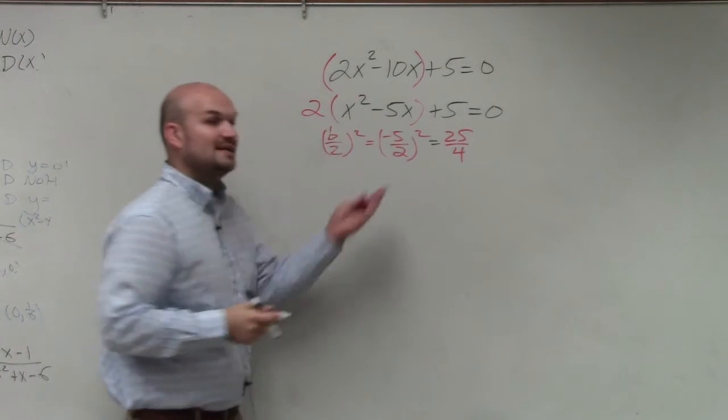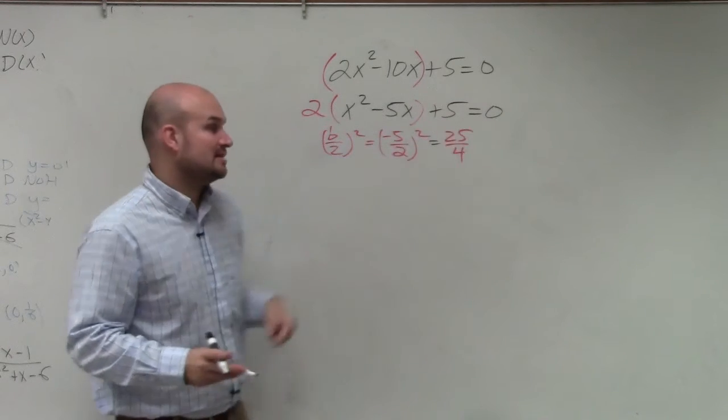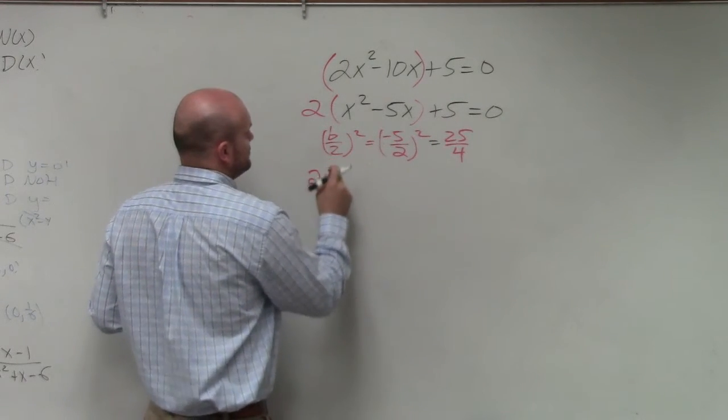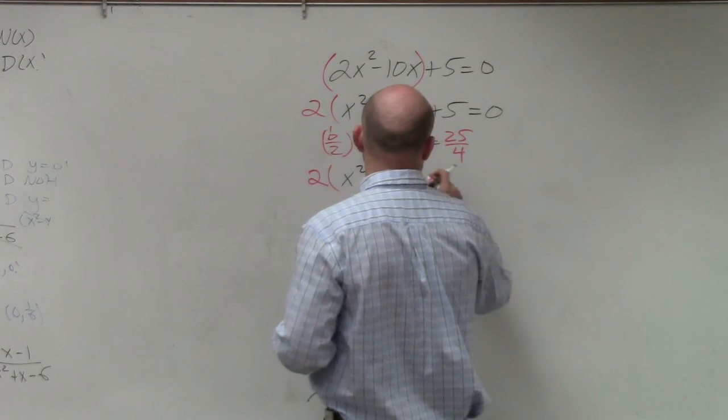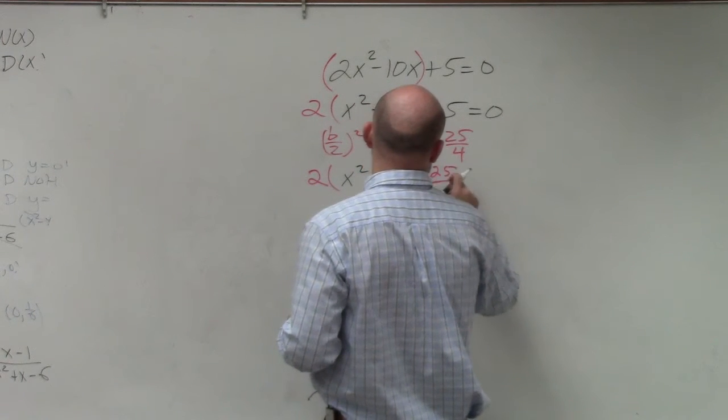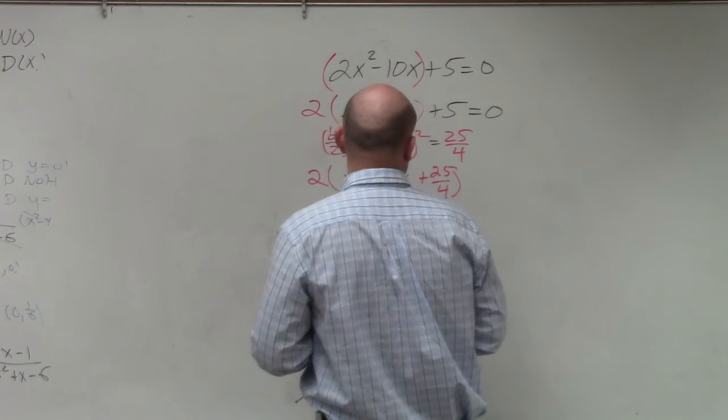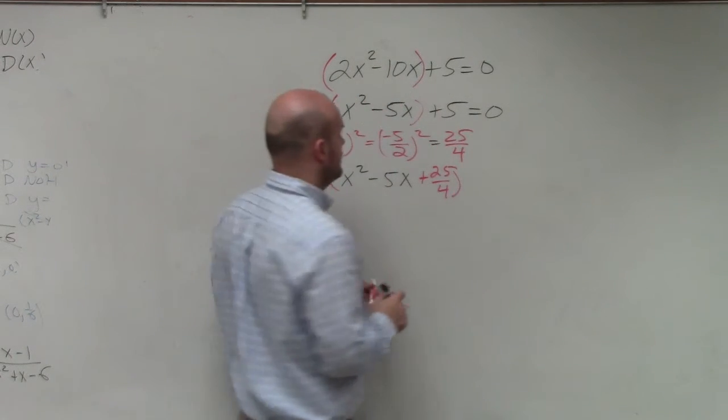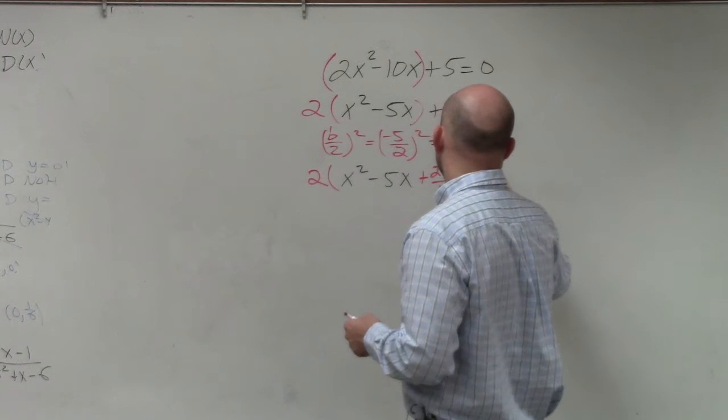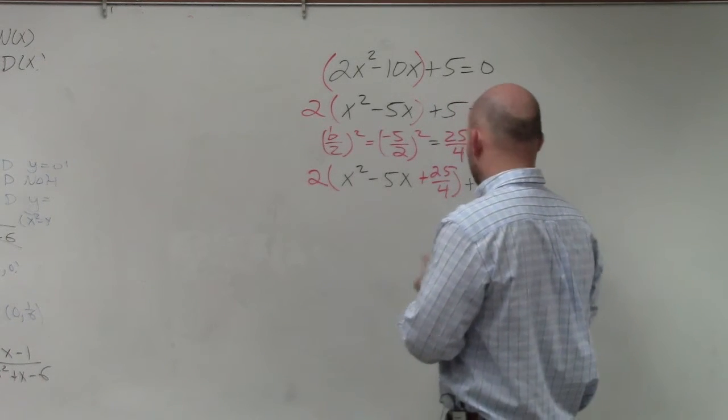So therefore, we take that number, add it inside the parentheses, and subtract it outside the parentheses. So I have 2 times x squared minus 5x plus 25 over 4. Yeah, no? 5 divided by 4. Oh. Plus 5 minus 25 over 4.